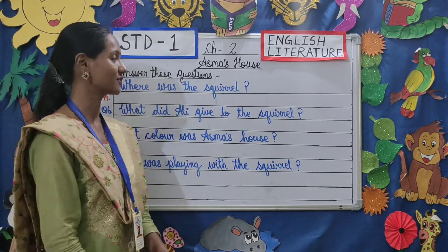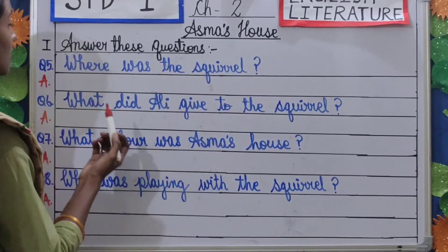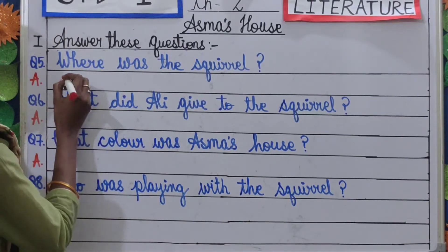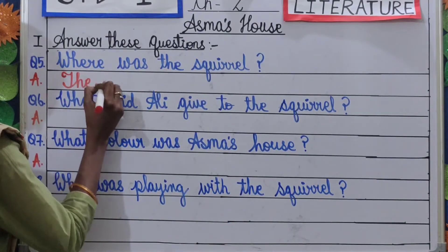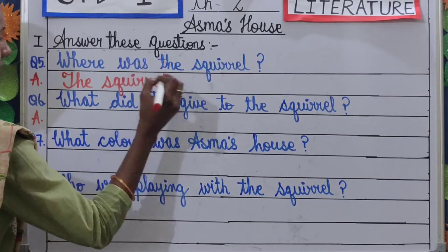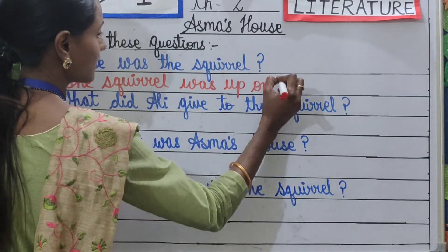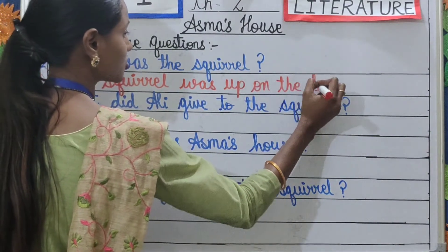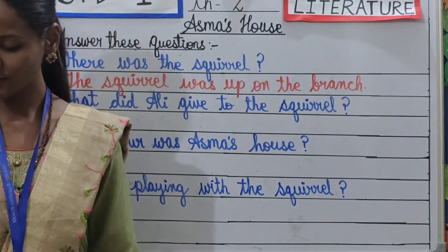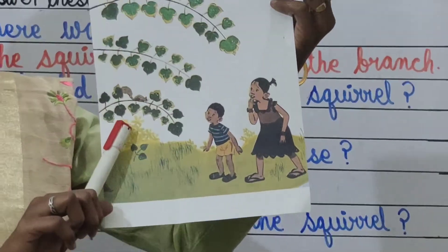Moving on to our next question. Question number 5: Where was the squirrel? The squirrel was up on the branch. Let's write the answer: The squirrel was up on the branch. As you can see in this picture, the squirrel is up on the branch.